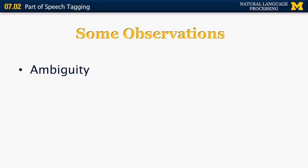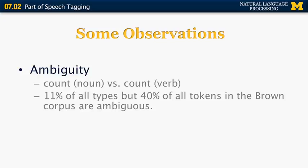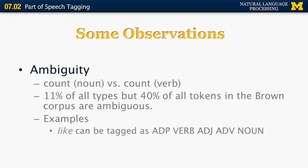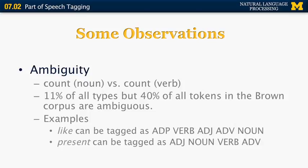Words in English are often ambiguous. For example, the word 'count' can be a noun and also a verb. Eleven percent of all types in the Brown corpus are ambiguous. However, those tend to be the most frequent words, so 40% of all tokens in the Brown corpus are ambiguous. For example, the word 'like' can have as many as five different tags: ADP, verb, ADJ, ADV, and noun. The word 'present' can be tagged as an adjective, noun, verb, and adverb.